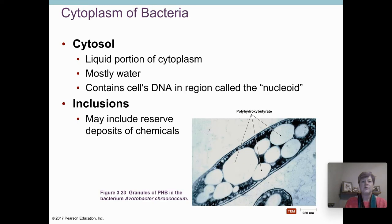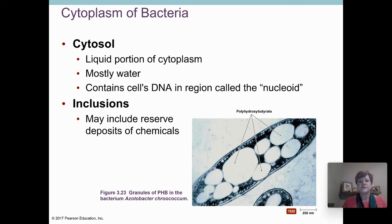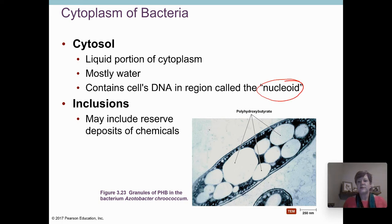What else do bacteria have? Of course they have cytosol — that's the liquid portion inside the cell, mostly water, with dissolved monomer units like simple sugars, amino acids, and nucleotides. The area within the cytosol where the DNA is located — we don't call it the nucleus but the nucleoid, or the nucleoid region — is sometimes used to refer to where the DNA is found.